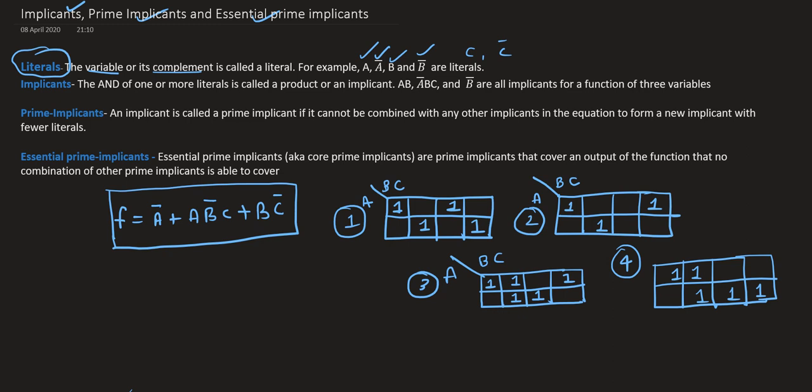This is the same as the English letters. If I want to calculate the literals in this equation, how many literals are there? Counting: 1, 2, 3, 4, 5, and 6 — so there are 6 literals. Just count the number of variables. A and A bar are also called variables.